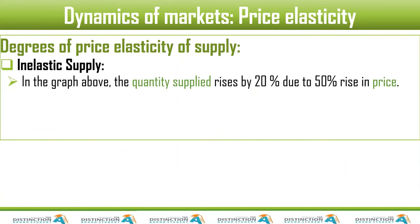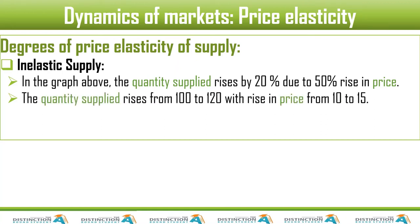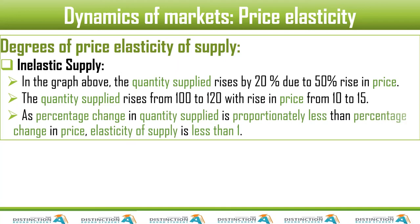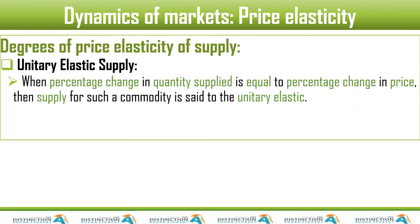The quantity supplied rose by 20% due to a 50% rise in price. The quantity supplied rises from 100 to 120 with a rise in price from 10 to 15. A percentage change in quantity supplied is proportionately less than the percentage change in price — unlike the elastic case where it was proportionately more. So elasticity of supply is less than one — we calculated 0.4 — therefore it is inelastic.